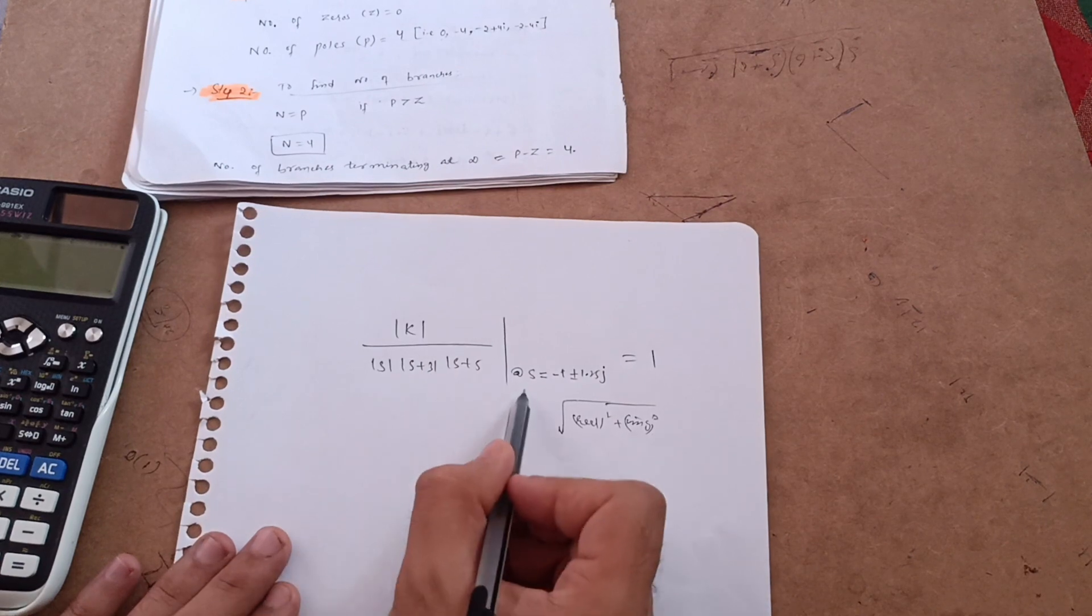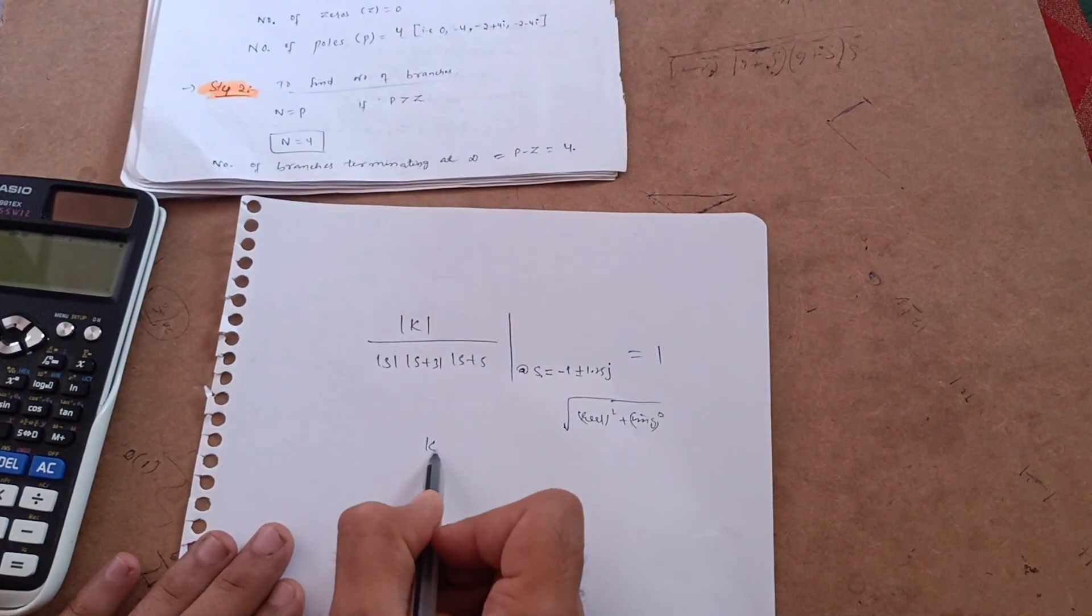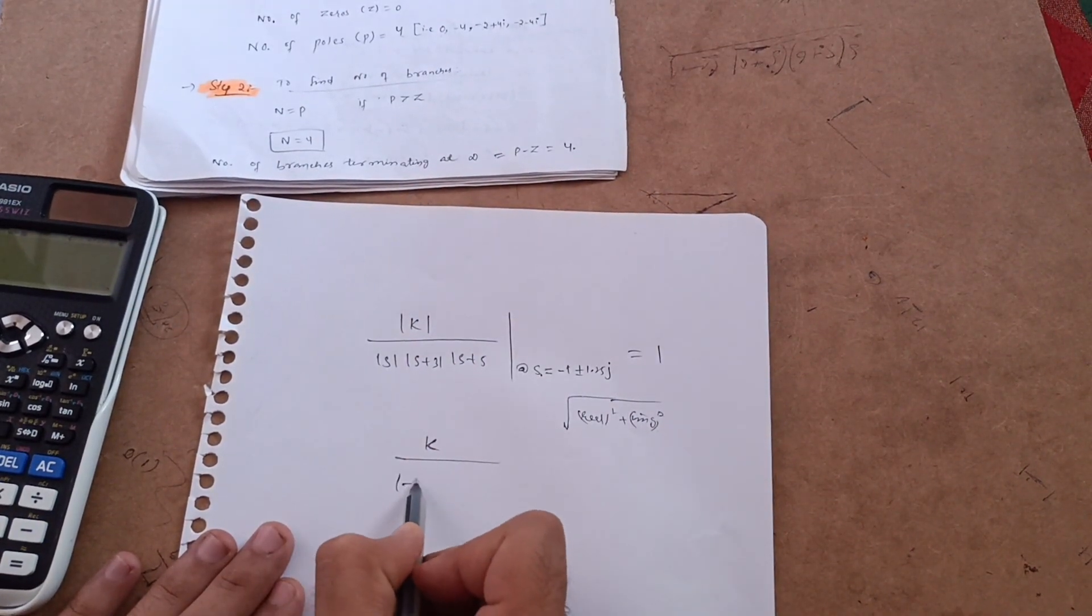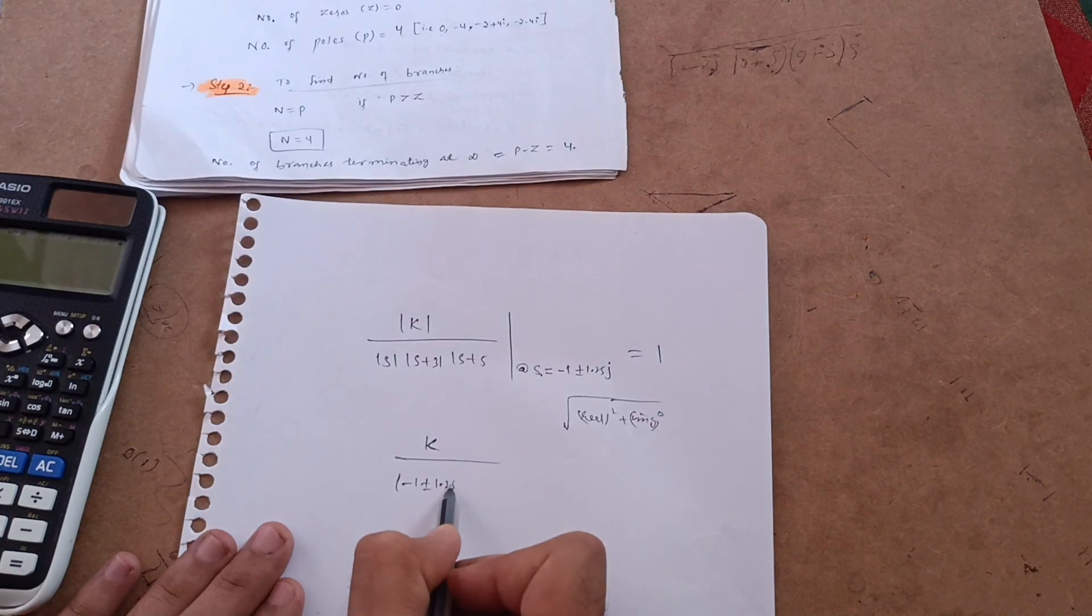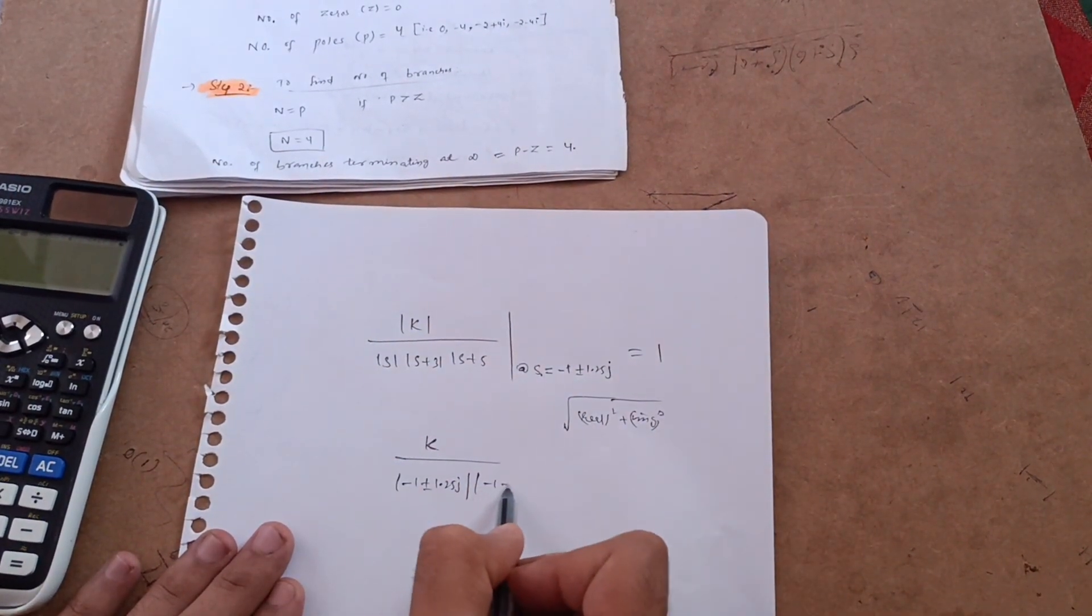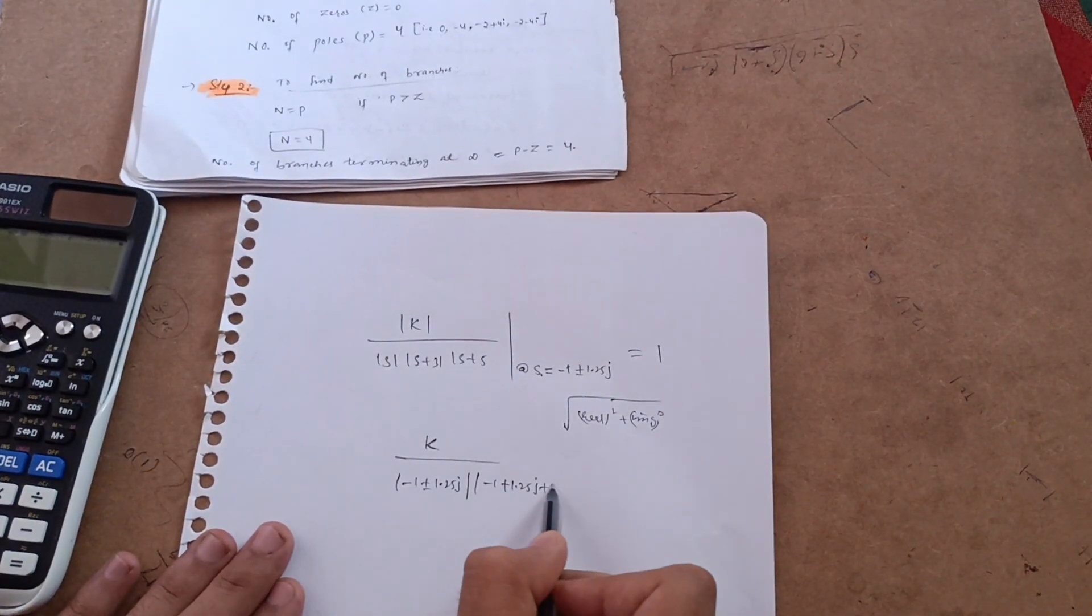You just put the values of s is equal to minus 1 plus 1.25j. So it is actually mod of k is k, so s value you have to put. So mod of minus 1 plus 1.25j, then s value is same, minus 1 plus 1.25j and plus 3 is here.